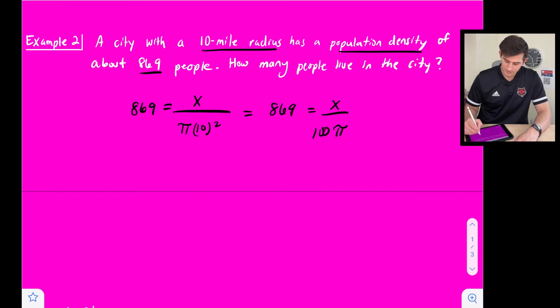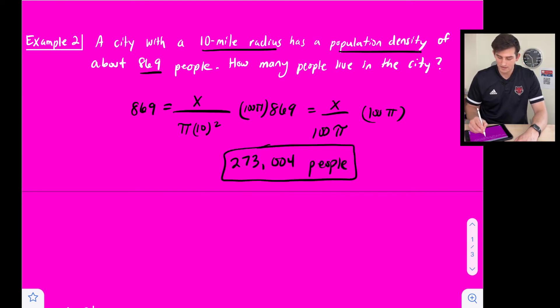So now to solve this we want to multiply both sides by 100 pi. So 100 pi here and 100 pi right there. In our calculator we do 869 times 100 pi and that's going to give us approximately 273,004 people. And our label there is just people because it says how many people live in the city. So that'd be 273,004 people.